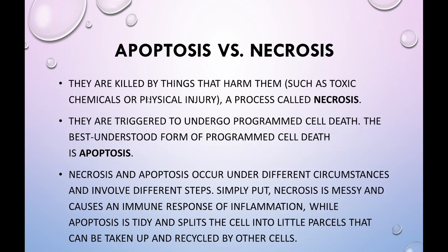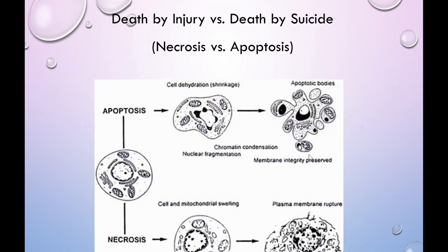Cells killed by harmful things such as toxic chemicals or physical injury undergo necrosis. Cells triggered to undergo programmed cell death undergo apoptosis — the best understood form of programmed cell death. Necrosis is due to physical harm; apoptosis is due to mutation, infection, or radiation. Necrosis is a messy process and apoptosis is a tidy process, because apoptosis produces small apoptotic bodies while necrosis results in bursting of cells.